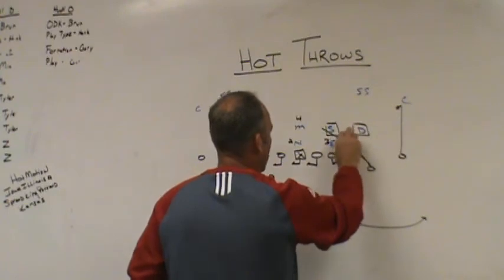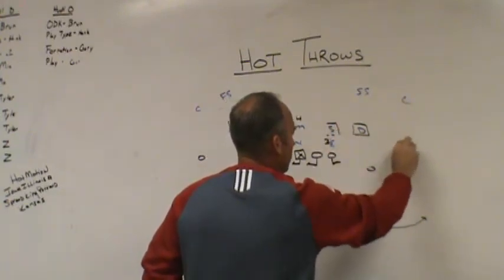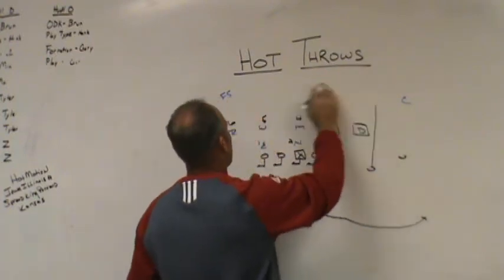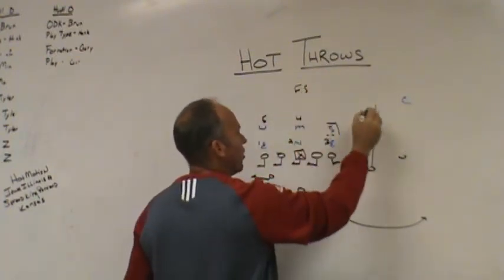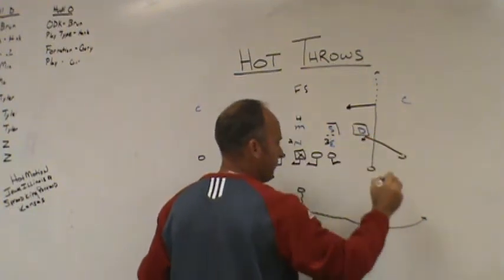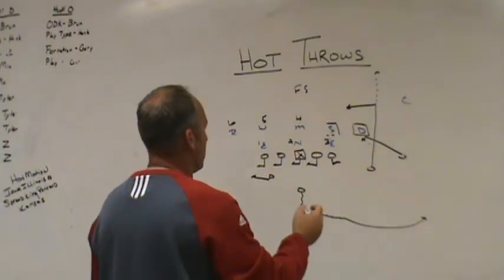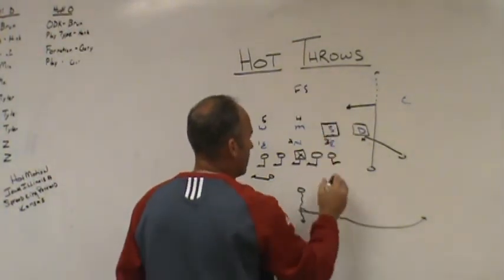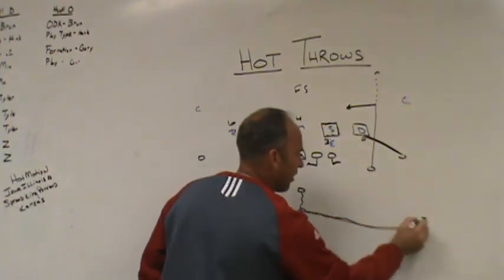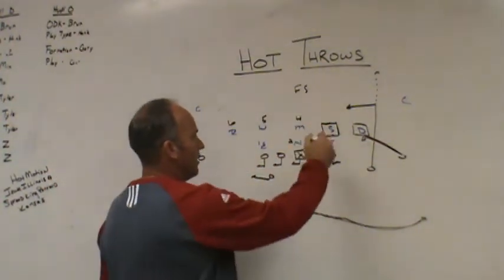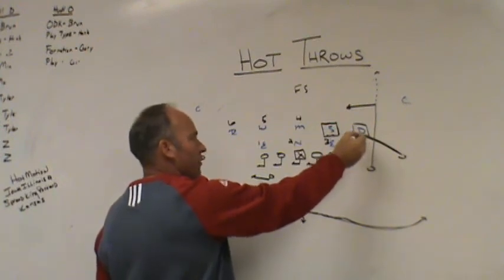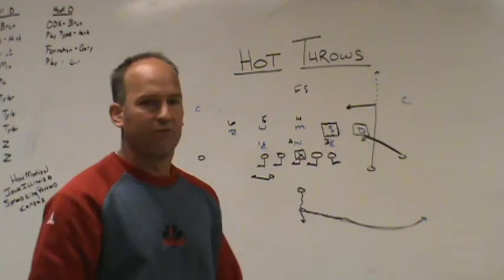If you want a seam-read progression, we could run seam read with a dig to our number two receiver, a snag by number one, and a hot flare or hot swing by our back. Against an eight-man front it would be one-high. The quarterback understands who seven and eight are — he has the snag as an inside-breaking route and the hot flare or swing as his outside-breaking route. Against inside stack blitzers, check and look at the snag first; if the dog comes, replace with the outside hot swing or hot flare.